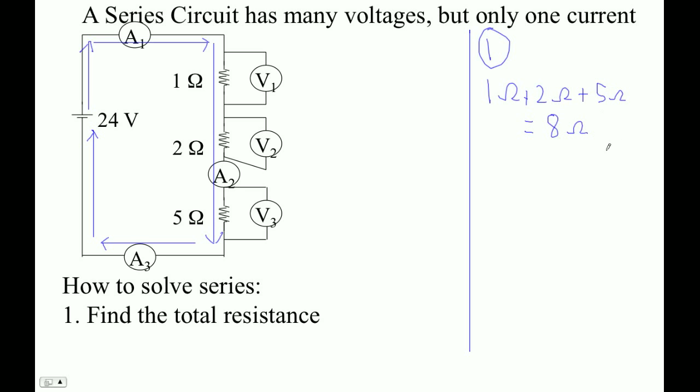The next thing to do, the second thing to do, is to find the one current. And the one current is easy. Now we've got 24 volts divided by eight ohms. I'm using Ohm's law. I'm using the fact that I equals V divided by R. So 24 divided by eight is 3.0 amps.